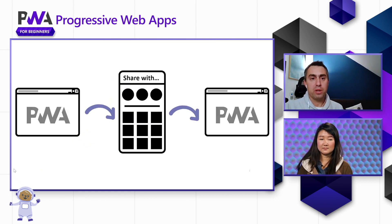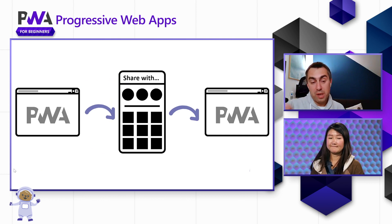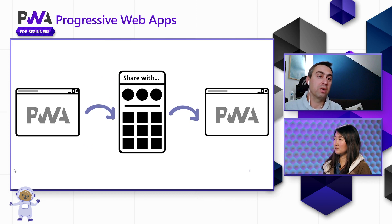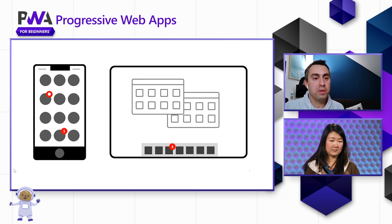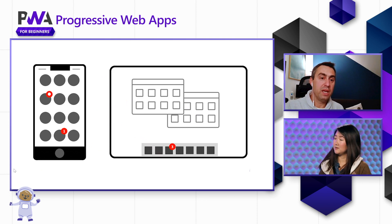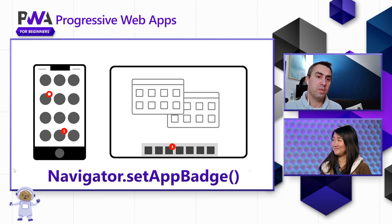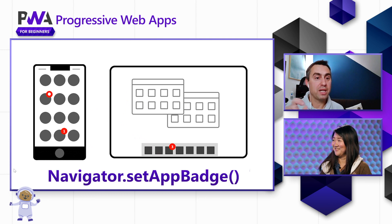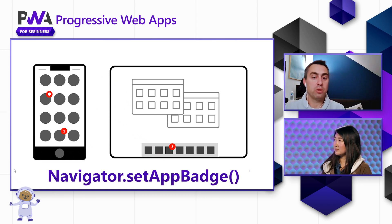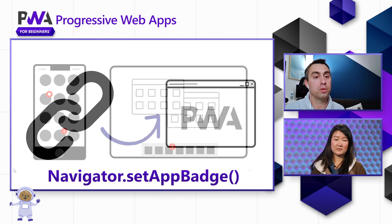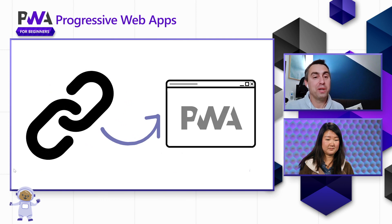Another capability is sharing. Progressive web apps can actually interface with the operating system share dialog, which means they can share content to other applications and receive content from other applications. And another one — maybe a bit more subtle but making a big difference in user experience — is badges. You can call navigator.setAppBadge, a really simple function, to display a little red badge on top of the app icon on your mobile phone or desktop to attract user attention and reengage them within the app.